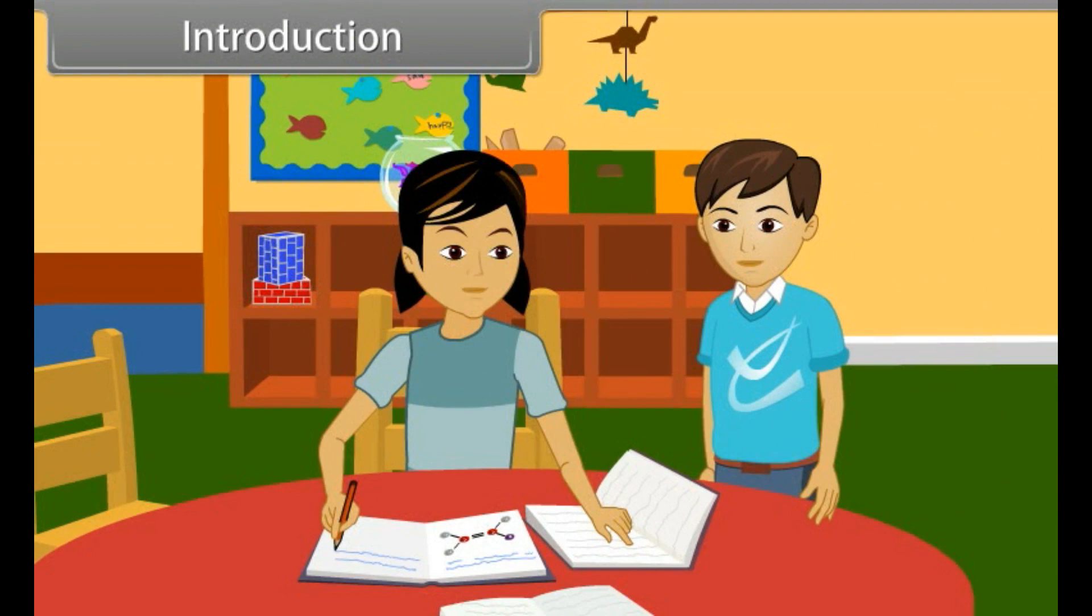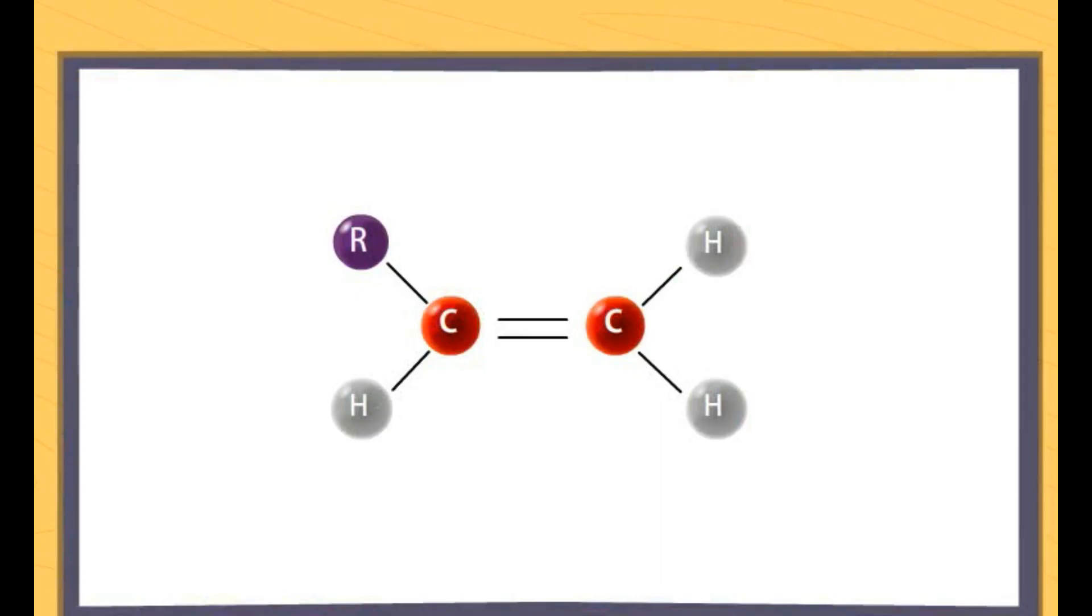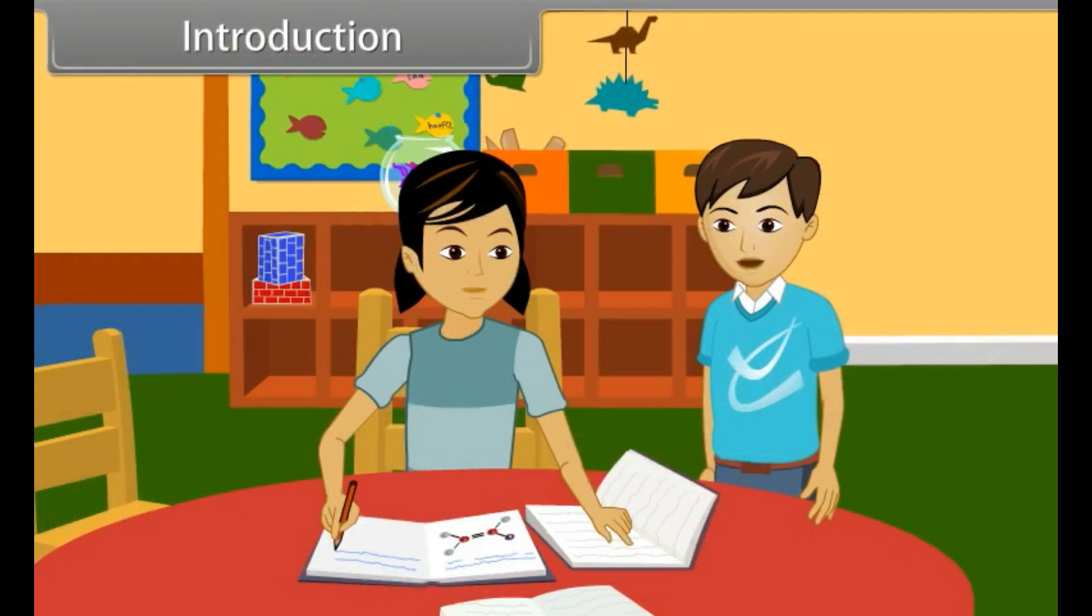Don't disturb Ankhush, let me study. What are you studying? I am doing my homework of chemistry. You are doing it wrong. What are you doing? Now this is correct. No, this is double bond and this is an alkene. Teacher has taught us about single bond and alkenes, but she did not teach alkenes. What are they? Alkenes are unsaturated hydrocarbons, and so are alkynes. Come, I will tell you in detail about alkenes and alkynes.